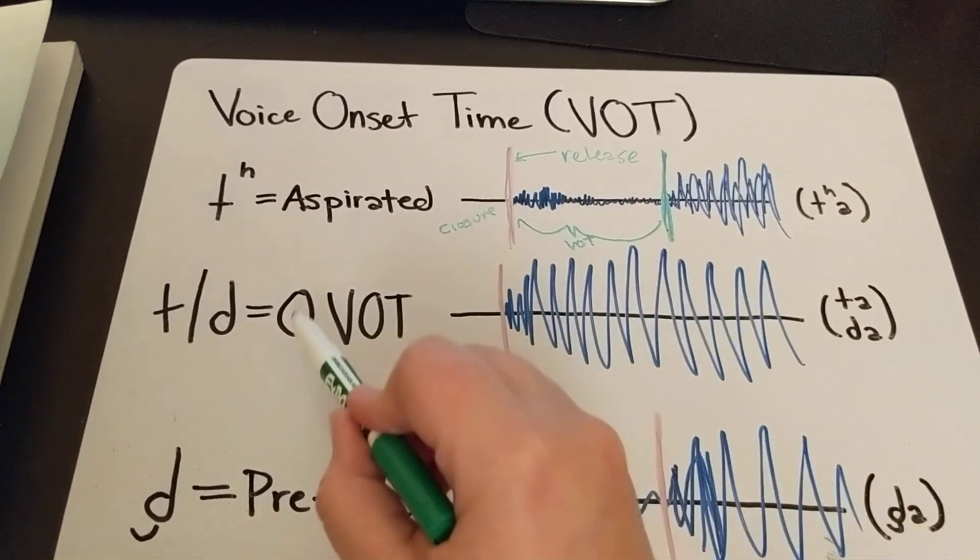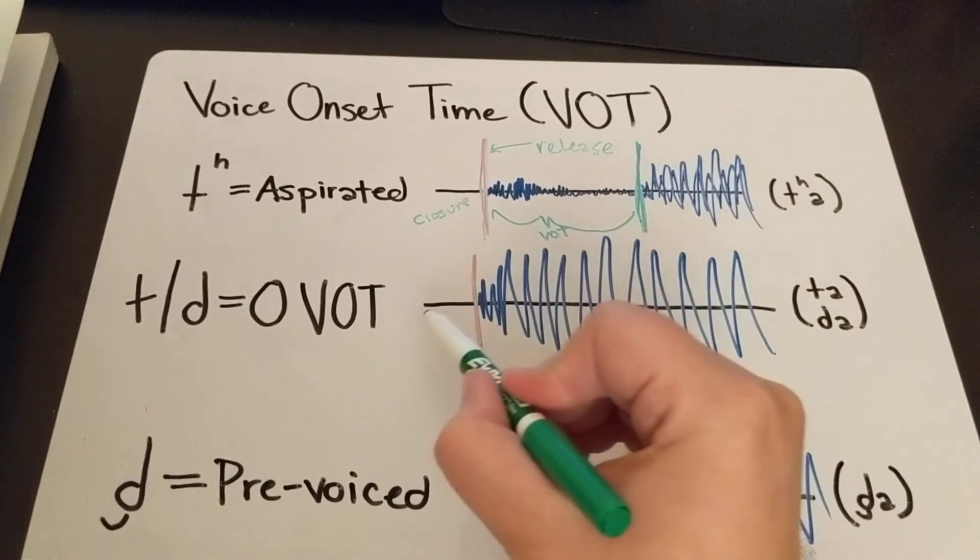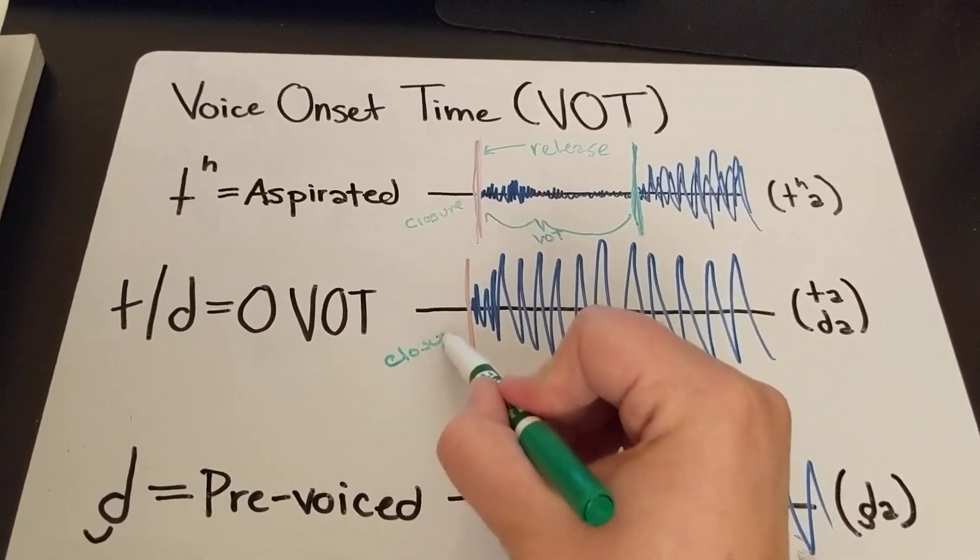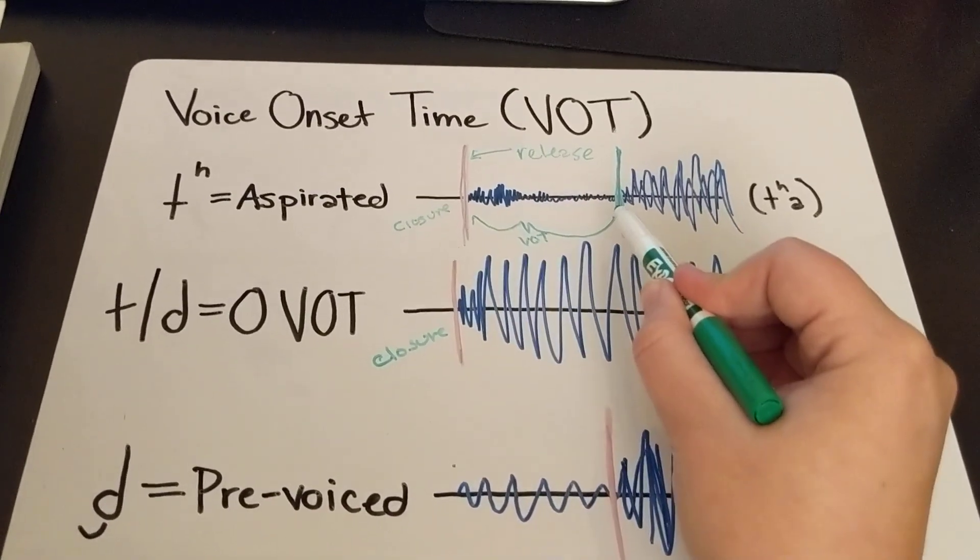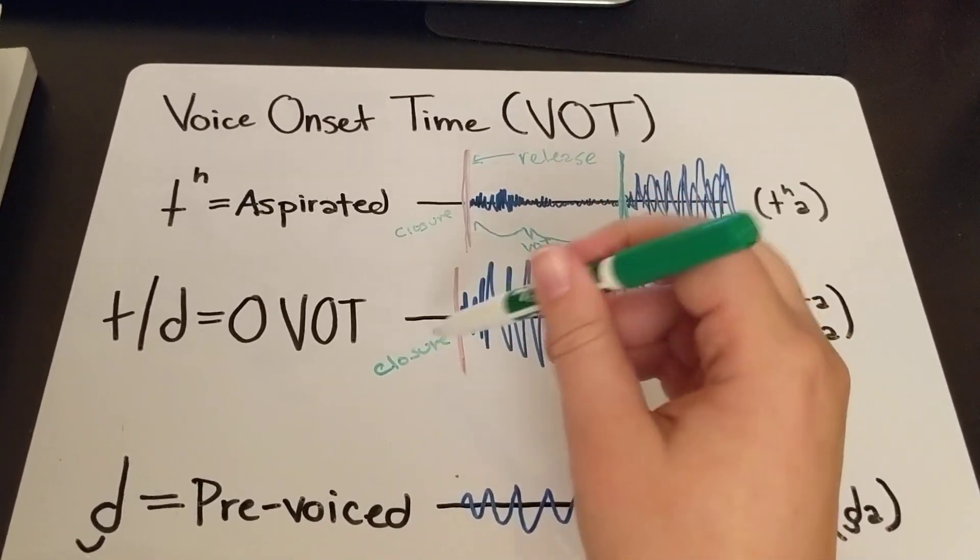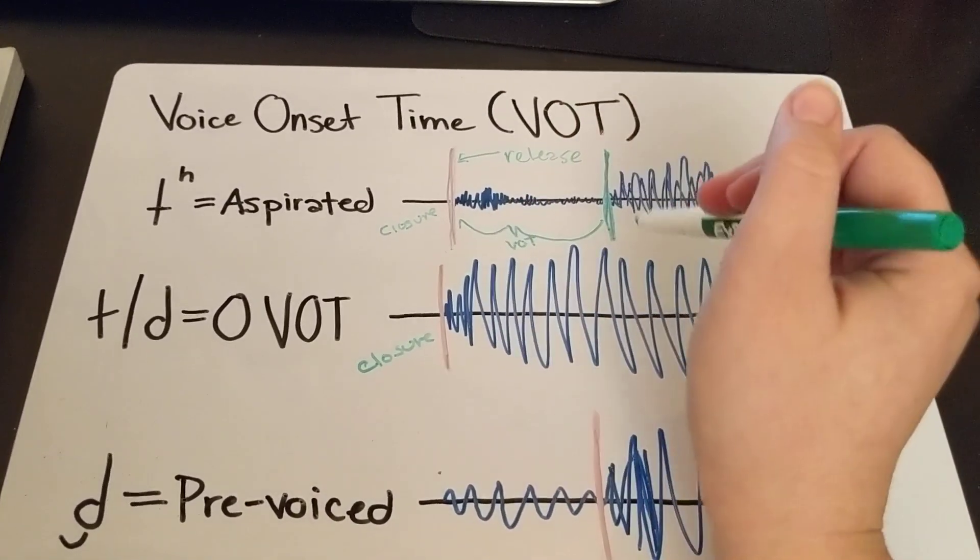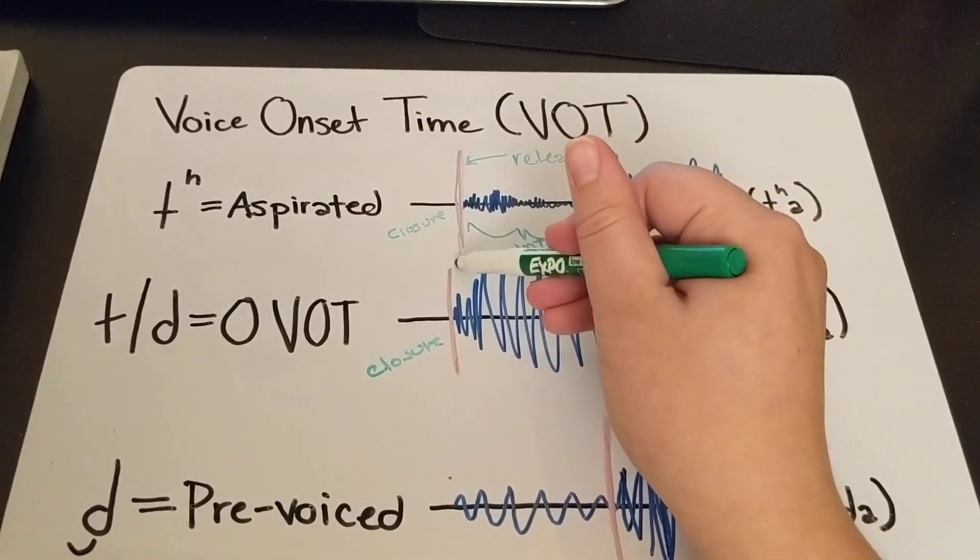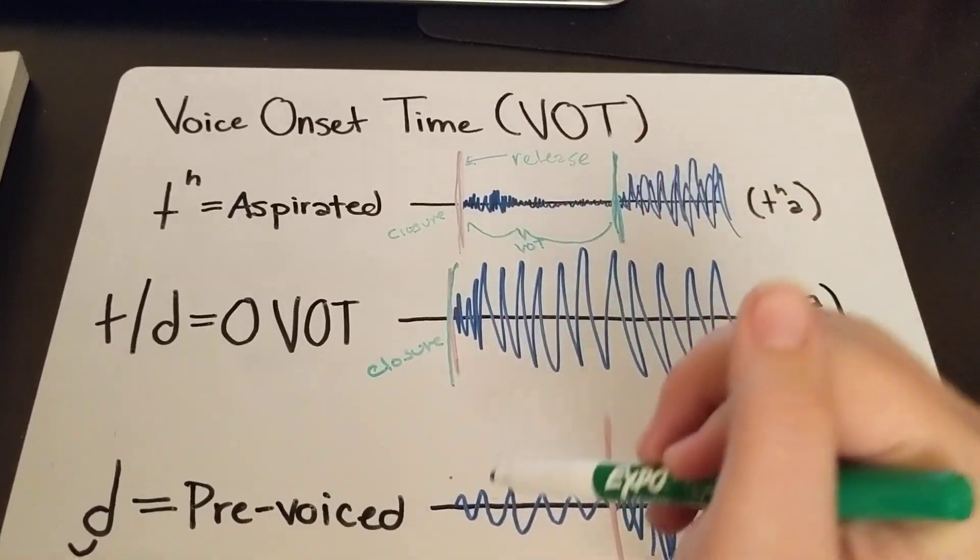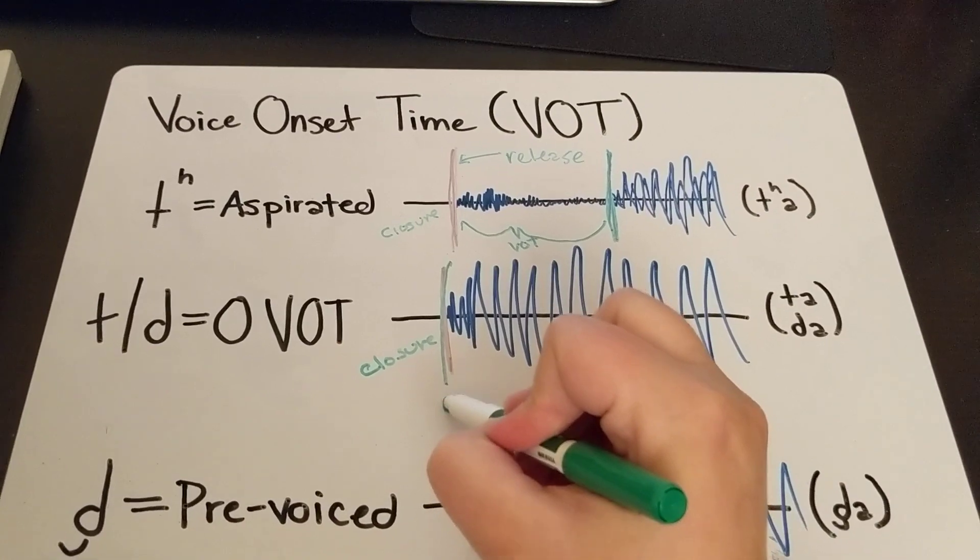This is a zero voice onset time. So you can see here's the closure, but we've got none of the hissy stuff. So our closure and our release and the voice onset are both together right there. And so it's a zero VOT.